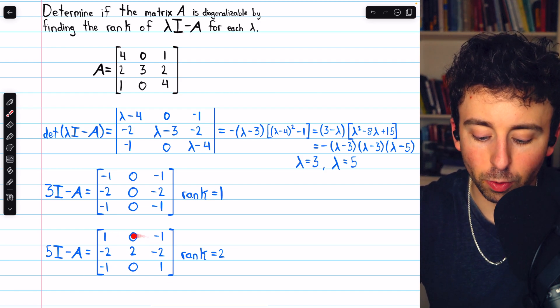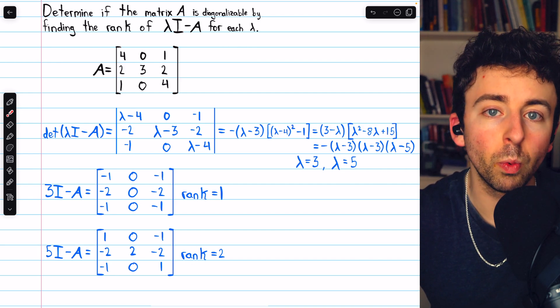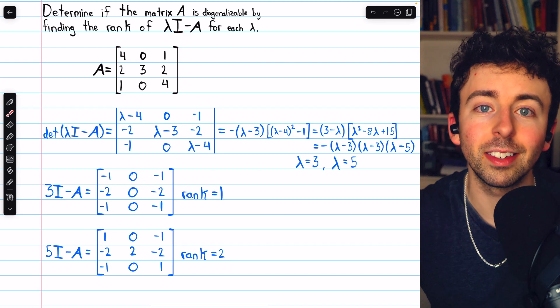On the other hand, this matrix is also 3 by 3, but its rank is 2. So its nullity must be 1. Rank plus nullity here must equal 3.